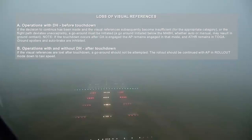If the touchdown occurs after go-around is engaged, the autopilot remains engaged in that mode, and ATHR remains in TOGA. Ground spoilers and autobrake are inhibited. Operations with and without Decision Height, after touchdown: if the visual references are lost after touchdown, a go-around should not be attempted. The rollout should be continued with APP in rollout mode down to taxi speed.